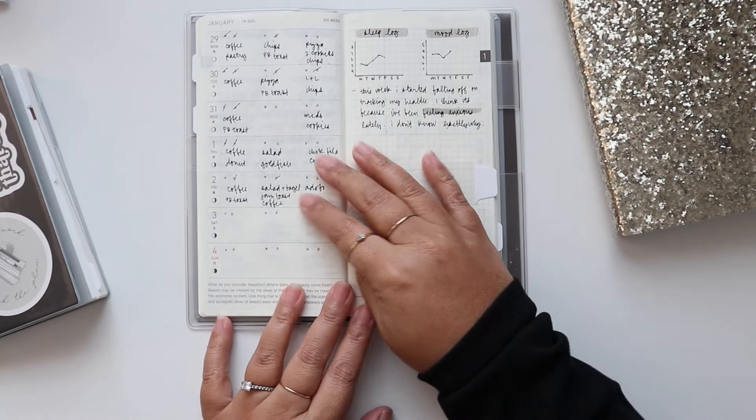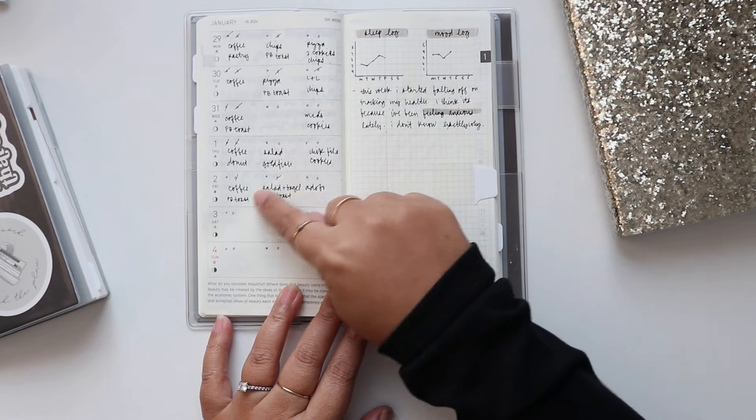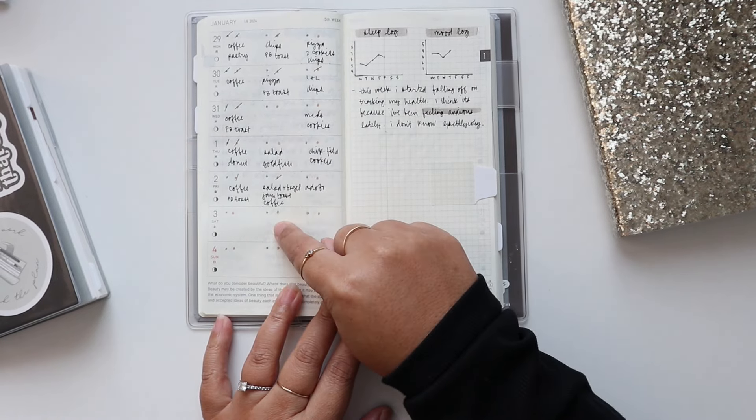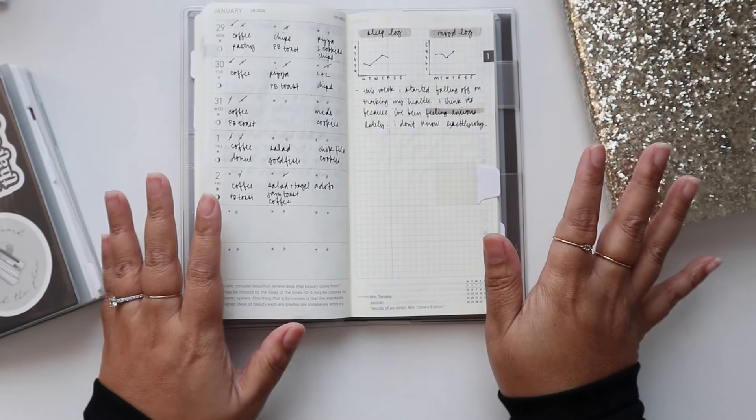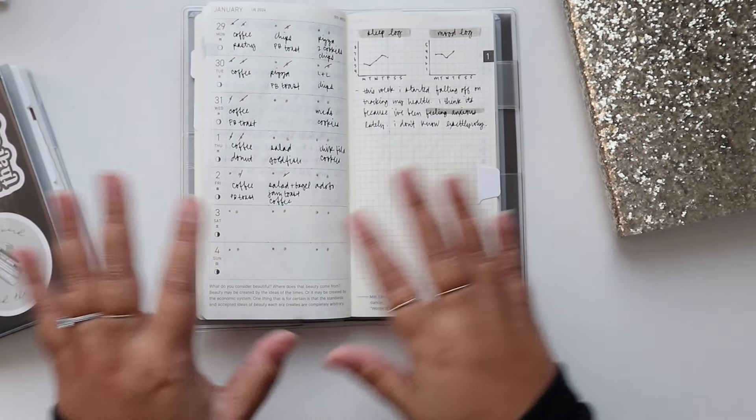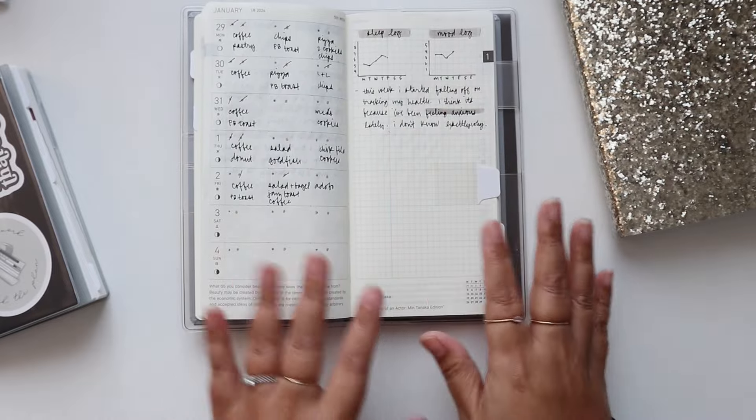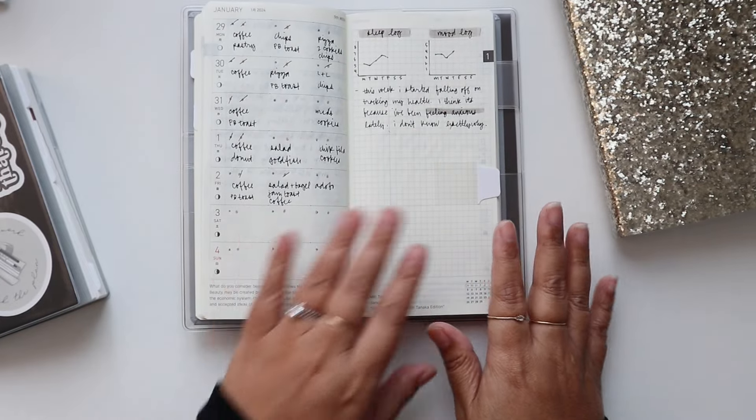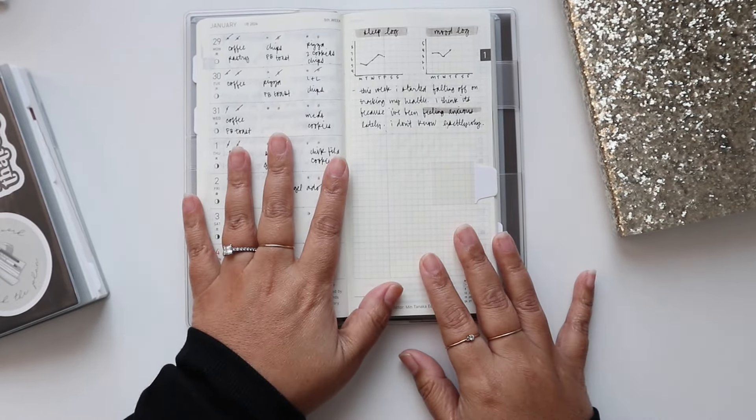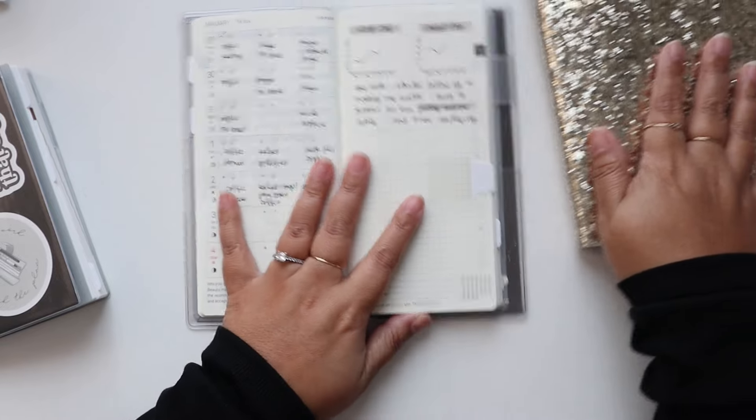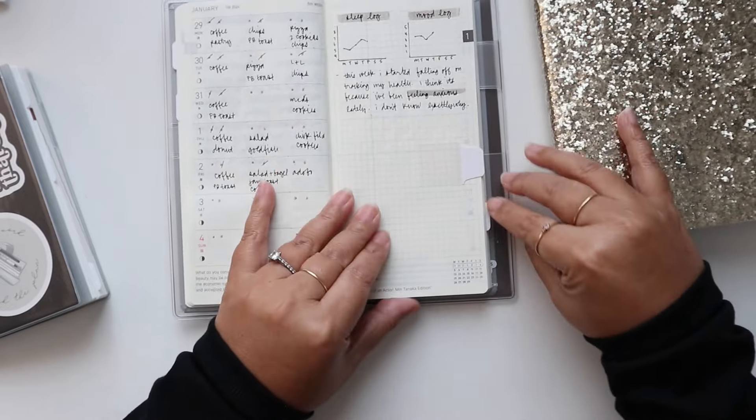And then here which is the current week you can see I start really falling off on my tracking and that's okay. I'm not saying that's not okay but what's helping me is to see what could be affecting that, like what's going on. So I find this really interesting.